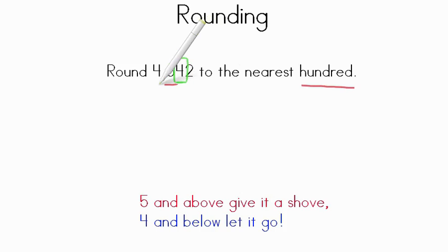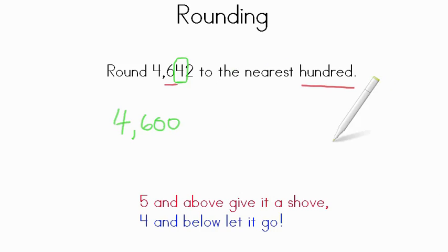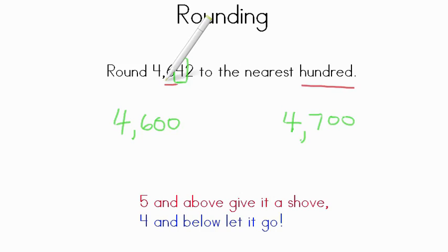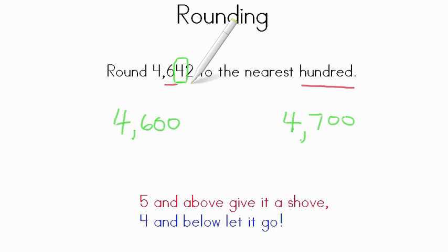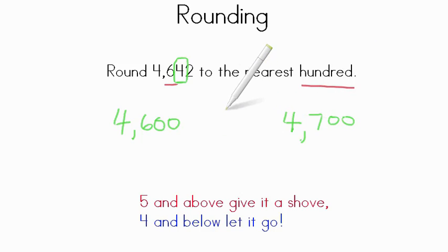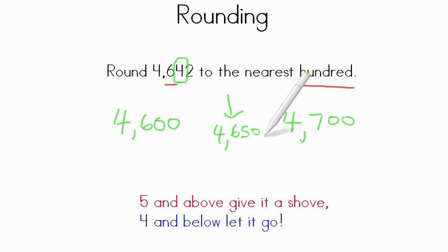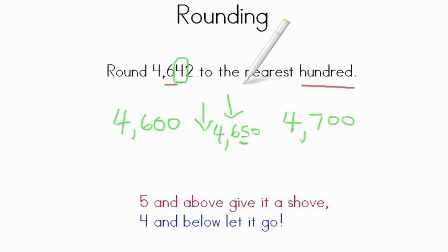Well, here we have 600, so there's going to be 4,600 as one benchmark number. And then we have to go to the other benchmark number, which would be 4,700. So looking at 4,642, we have a 4 here. Remember the whole rule: 5 and above, give it a shove. 4 and below, let it go. A 4 in the tens tells you that it's closer to 4,600 rather than 4,700. The midpoint would be 4,650 — 4 is below that, so we are going to round to the nearest hundred: 4,600.